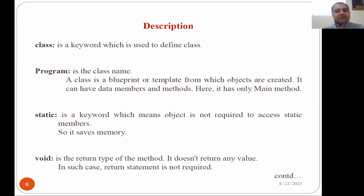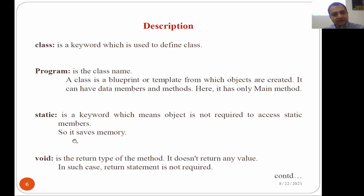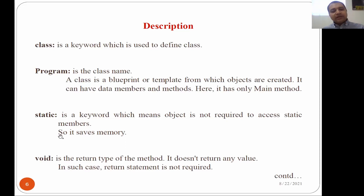The C# compiler handles this with the static keyword. When we put static with the main body, we don't need to create an object to trigger it — main will be triggered automatically. Because static does not create any object, it does not consume memory, which is why it saves memory and is fast in nature.